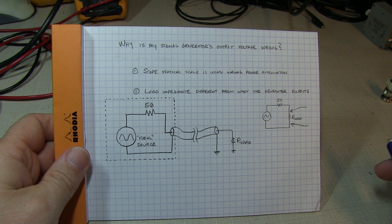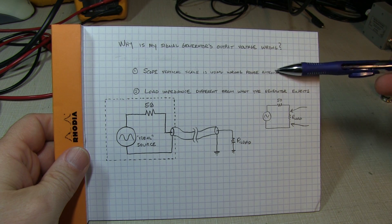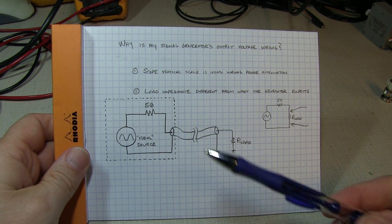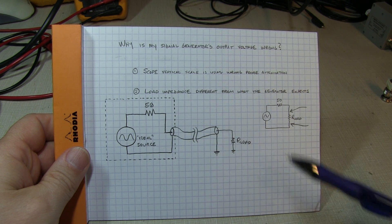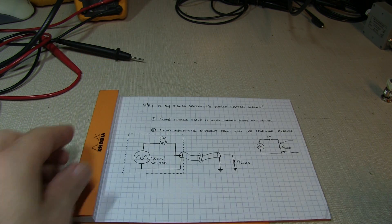Well, there's really two very common answers. One is that a lot of times if somebody is new to using a scope, they might have the vertical scale, especially the probe attenuation, set wrong on the scope.